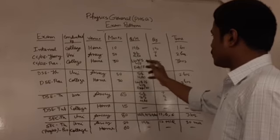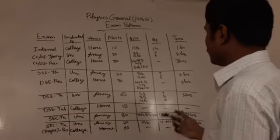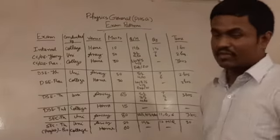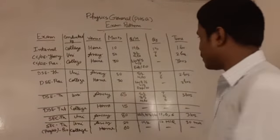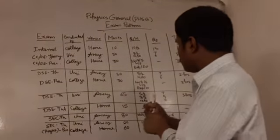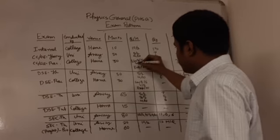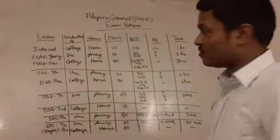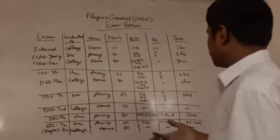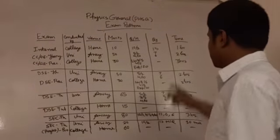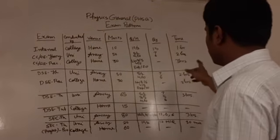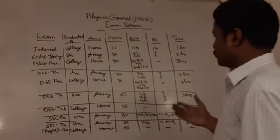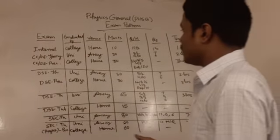One section is the lab workbook, which has a total of five marks. Then you have the viva, which also has a total of five marks. Then you have the experiment itself, which carries twenty marks. The total exam time is three hours, so all practical exams are three-hour exams.